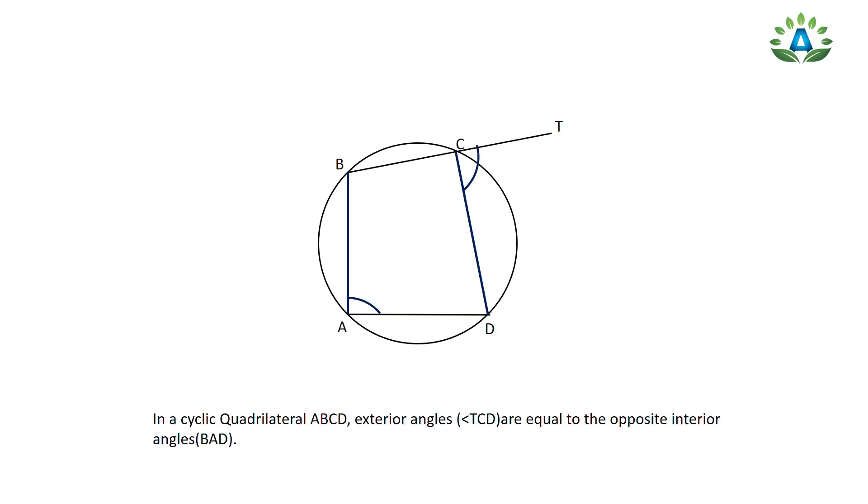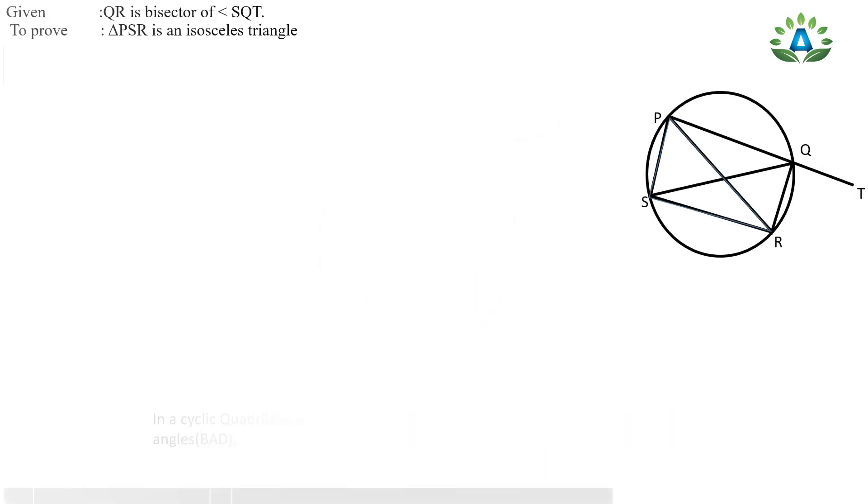The other theorem is about cyclic quadrilaterals. It states that in a cyclic quadrilateral, the exterior angle is always equal to the opposite interior angle. So angle TCD, the exterior angle, is equal to the opposite interior angle BAD.